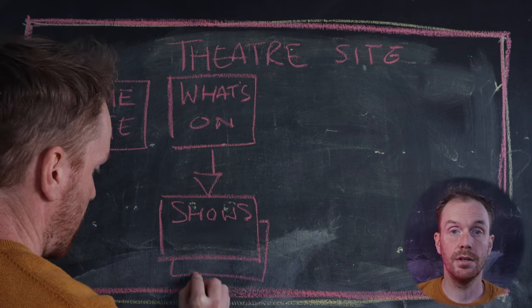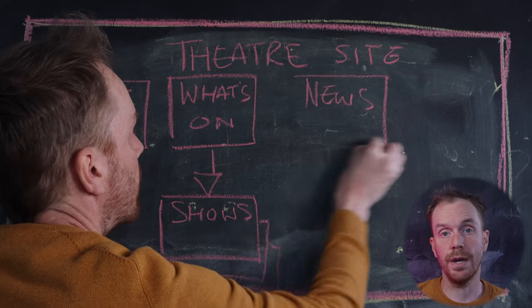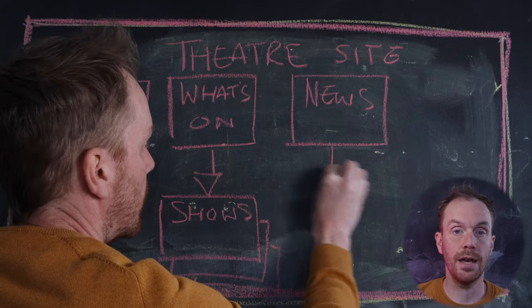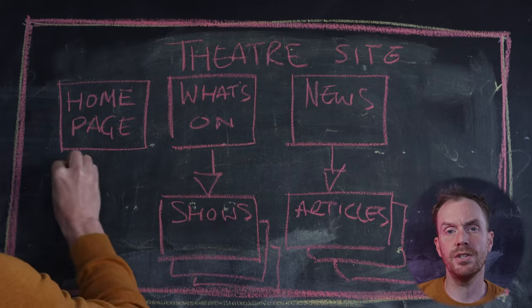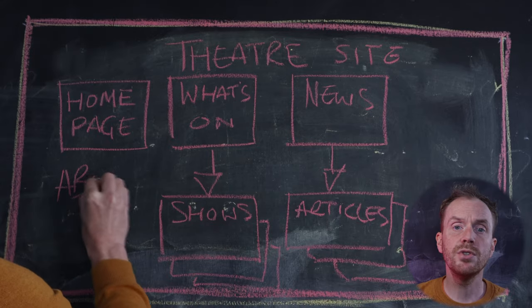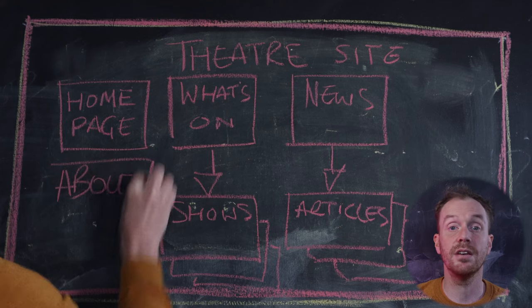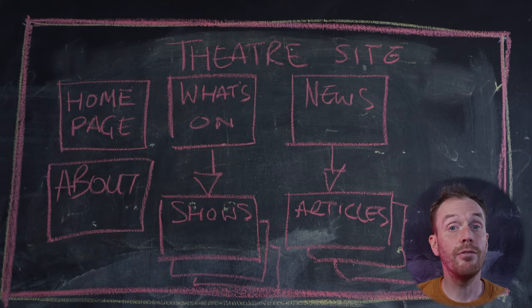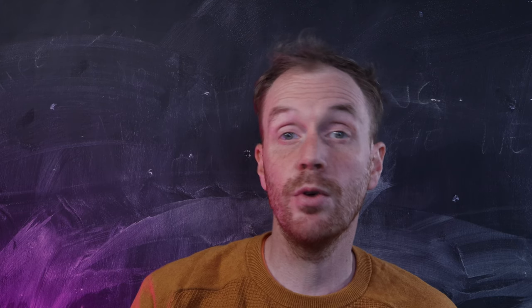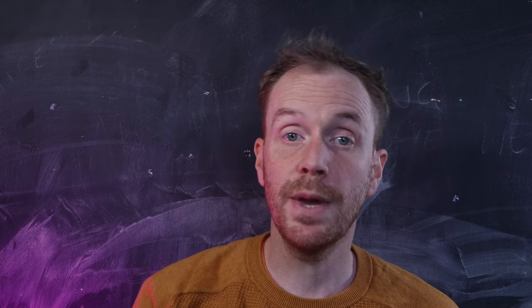Then we might have a news section, and again hundreds of article pages underneath that, and an about page. There might also be a set of pages for the payment process, but we do the purchase pathway pages at a different time, as these are often embedded pages from an external supplier. So while we have hundreds of pages, we don't need to test them all, as really we have only six or seven different types of pages. As a rule, try and find a page for each of these sections which has as many different types of content on it as possible.